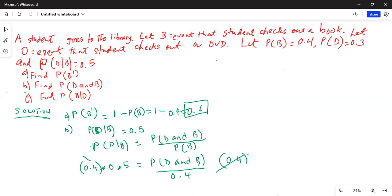When you do that, this 0.4 cancels with this 0.4, and 0.4 times 0.5 is 0.2, which is probability of D and B. So that is the answer for part B.